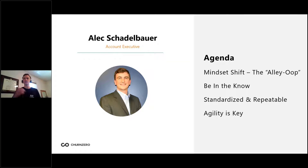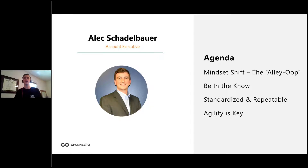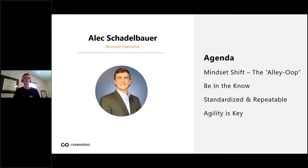For today's agenda, a few key areas I wanted to touch on: I really wanted to start off by talking about shifting the way that we view the word automation as high touch customer success leaders. From there, I want to dive into some real-world examples of how high touch CS teams are utilizing automation to make their jobs easier and keep their customers happy. Then we'll talk about how you can stay in the know, create standardized and repeatable processes, and help your team be more agile when things don't go 100% to plan.